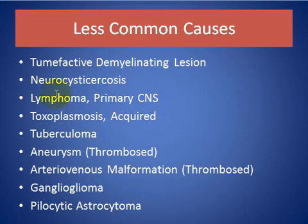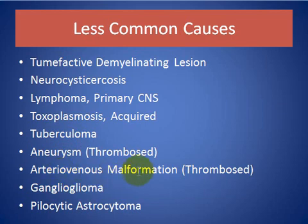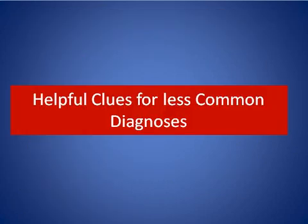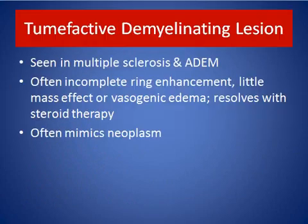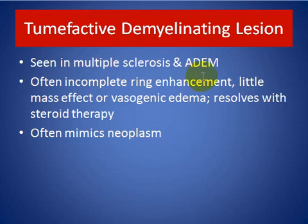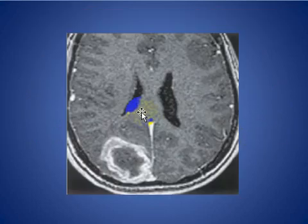Less common causes include: demyelinating disease, neurocysticercosis, lymphoma, toxoplasmosis, tuberculoma, aneurysm, arteriovenous malformation, ganglioglioma, and pilocytic astrocytoma. Tumefactive demyelinating lesions are seen in multiple sclerosis and ADEM, often showing incomplete ring enhancement with little mass effect or vasogenic edema, and respond to steroid therapy — often mimicking a tumor.